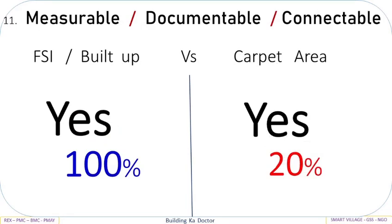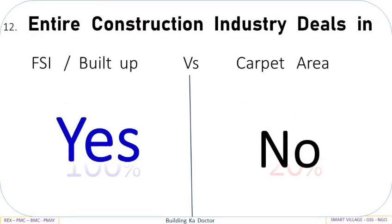FSI Built-Up is measurable, documentable, and connectable: Yes, vs Carpet Area — only 20%. The entire construction industry deals in FSI Built-Up: Yes, vs Carpet Area: No.